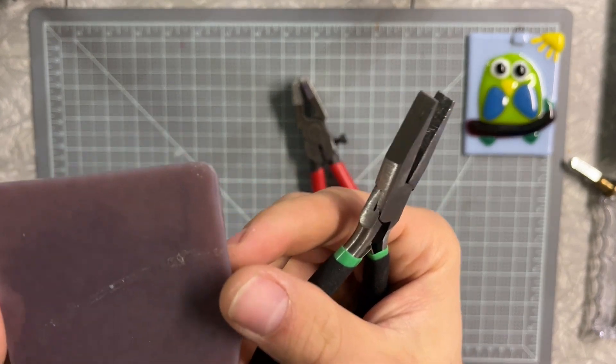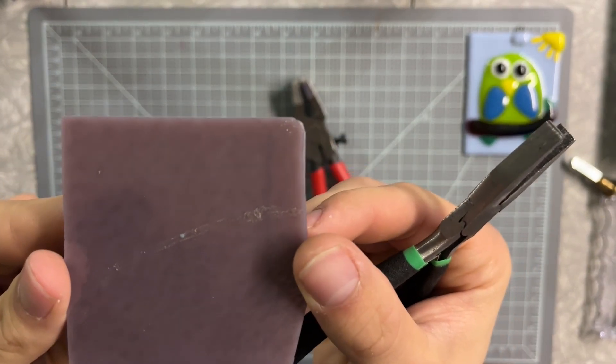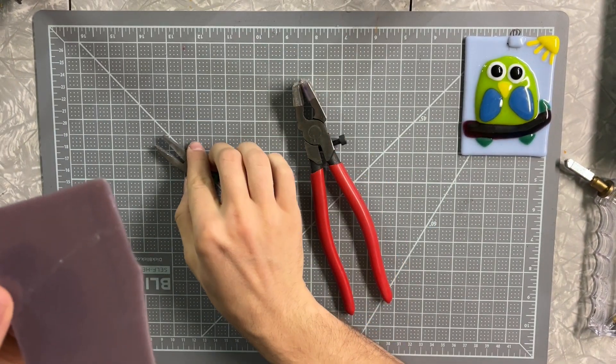You can see my corner went from a very sharp angular corner to a nice rounded corner. That's what the grozer pliers are used for.